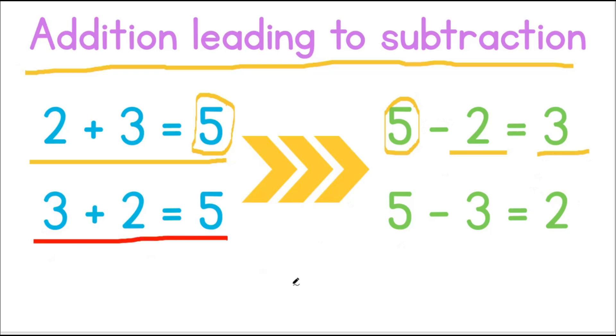3 plus 2 equals 5. Which is the same as saying 5 minus 3 is equal to 2. This is how we can use addition leading to subtraction. Let's practice this a little more.